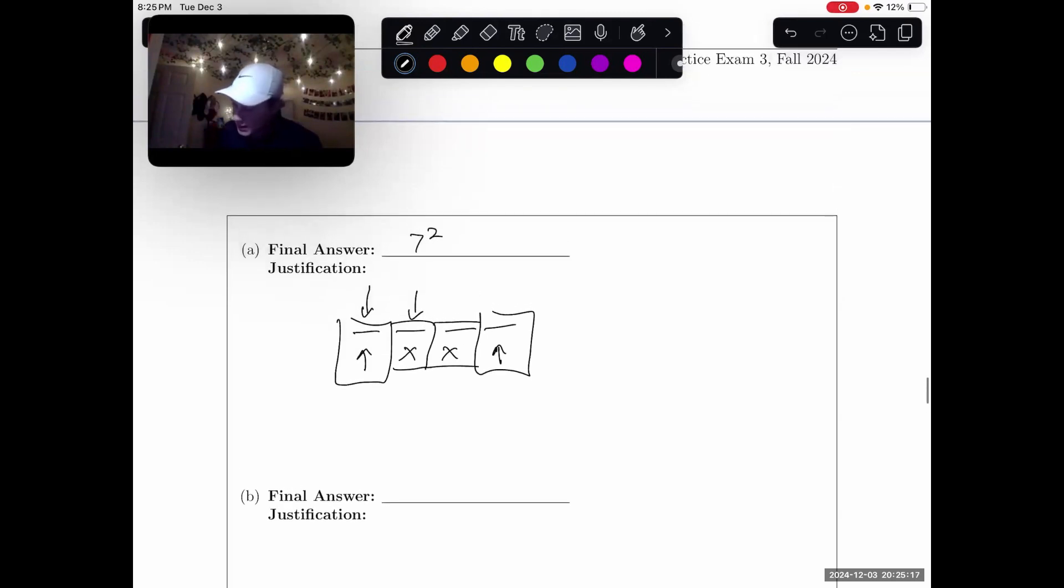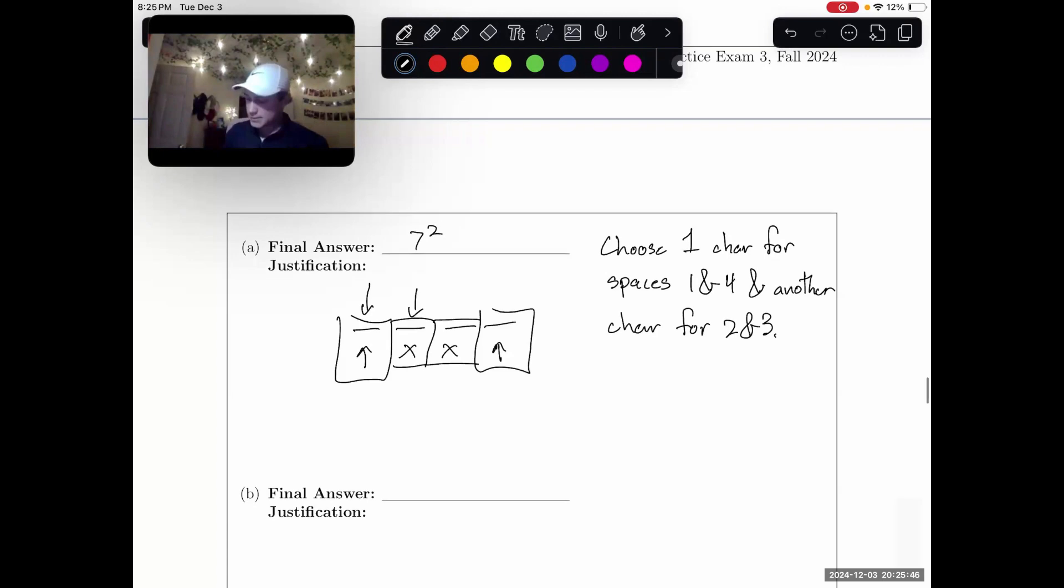So seven squared. The reasoning behind that is we choose one character for spaces one and four, and another character for two and three. That's our part A.